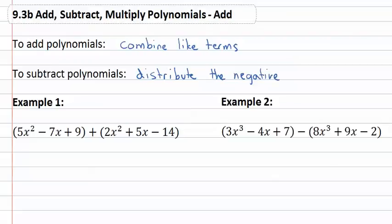So for example, if we have the polynomial 5x squared minus 7x plus 9, and we add to it the polynomial 2x squared plus 5x minus 14, we start looking for like terms. We've got an x squared in both polynomials, so 5 plus 2 gives us 7x squareds.